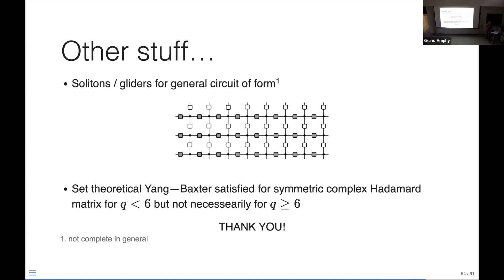There are plenty more results on these models in the paper. In particular, two things to highlight: for circuits of this form, we have a construction of solitons or gliders in general, although it's not complete except for the Fourier case. Also, there is some discussion of how the Yang-Baxter equation is satisfied by these systems for Q less than 6, curiously enough, but not necessarily for Q greater than or equal to 6. There are more details in the paper. Thank you.